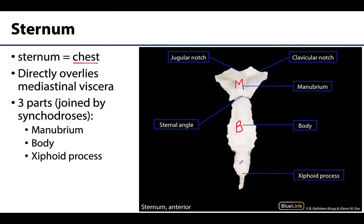The most inferior portion is the xiphoid process, and no two xiphoid processes look alike — there is considerable variability in size and shape. All three parts of the sternum articulate with one another and are joined by synchondroses, which are a type of cartilaginous joint.